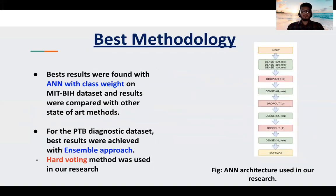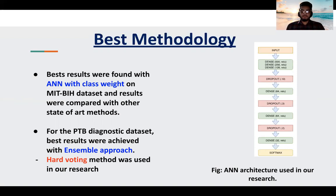In the methodology, the best results for the MIT-BIH dataset were found with ANN with class weights, and it is also compared with other state-of-the-art models in our research paper. For the PTB Diagnostic Dataset, the best results were achieved with an ensemble approach using the hard voting classifier to get the best accuracy.